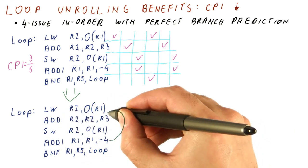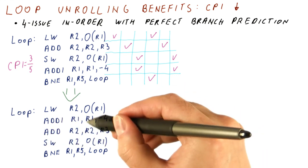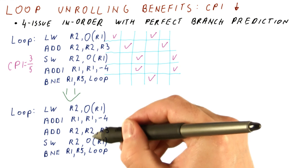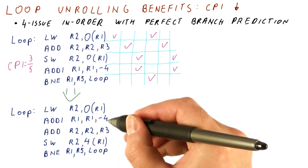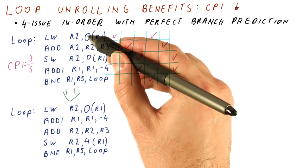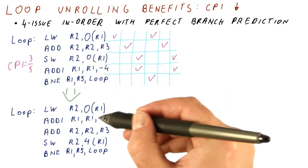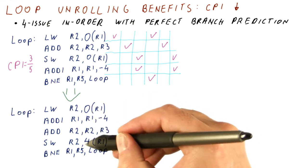So now that we are subtracting four from R1 here, we need to adjust this store so that it adds back the four that we decremented here. Because this store was supposed to store to the same element as the load. Now, however, we have moved R1, so to access the same element as the load, we need to add four here.